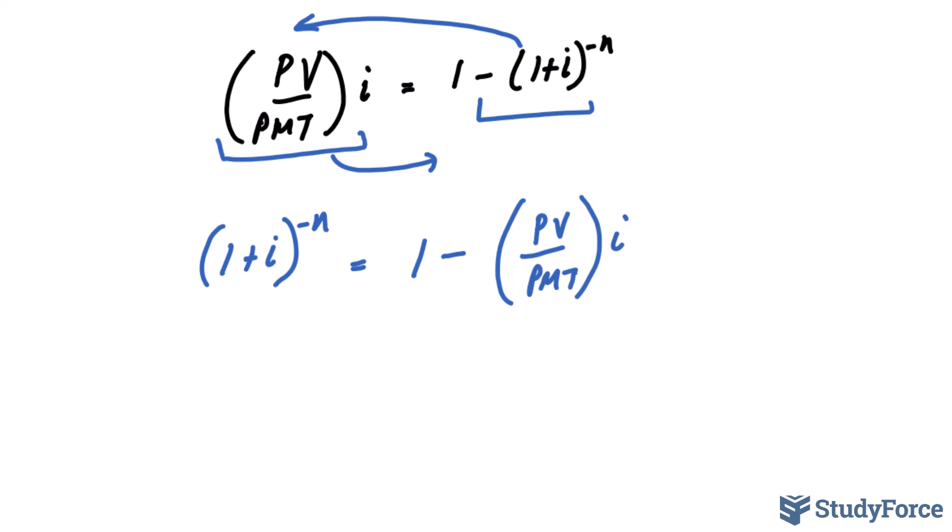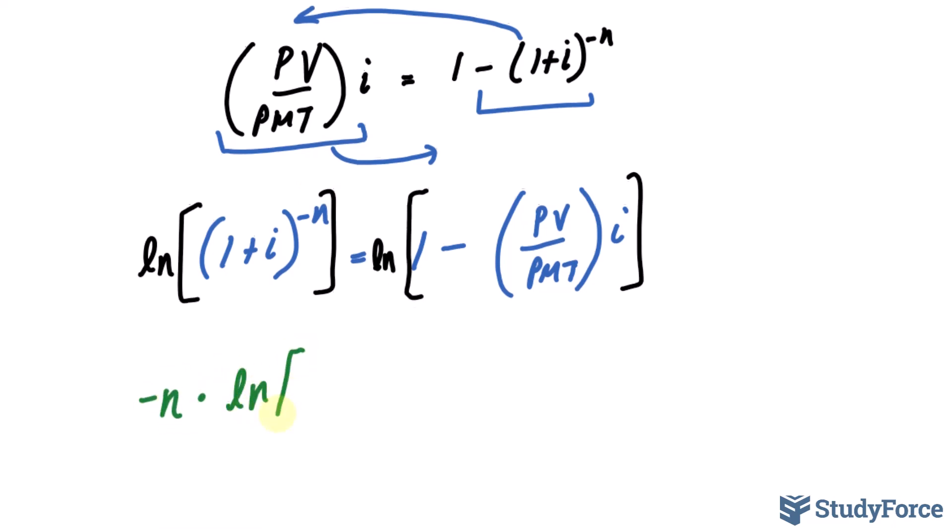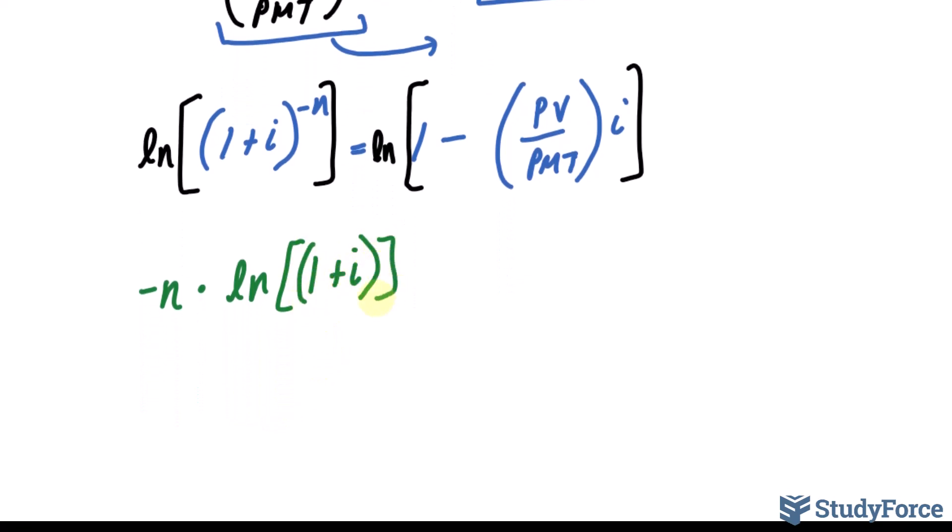The next step is to take the natural log of both sides. And that's represented using ln. There's a reason why we do this. And that is, it allows us to make the exponent, negative n, more workable. So, applying the logarithm rules, we end up having negative n times natural log of 1 plus i. And notice that the exponent of negative n is no longer an exponent if we write it this way. And on the right side, we have the natural log of 1 take away, PV over PMT multiplied to i.